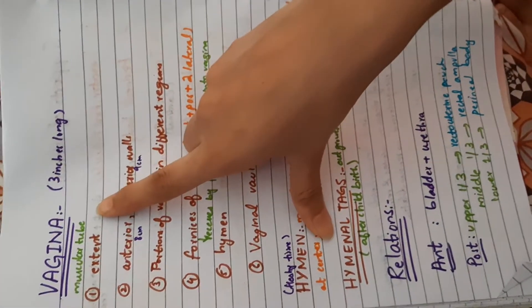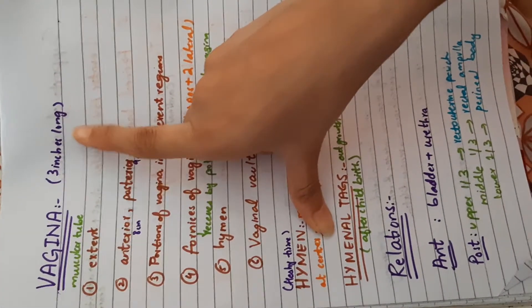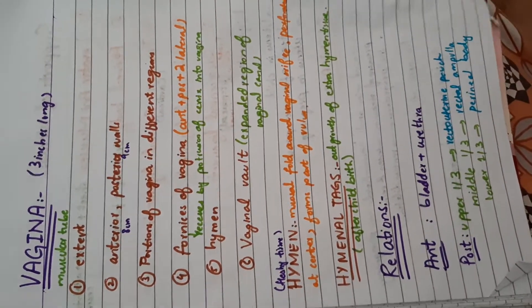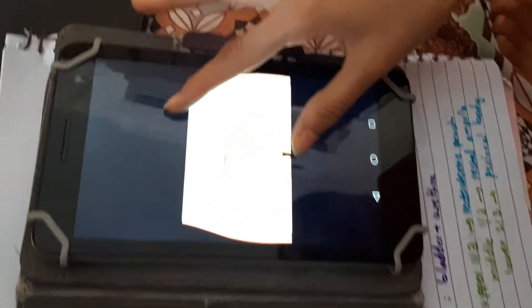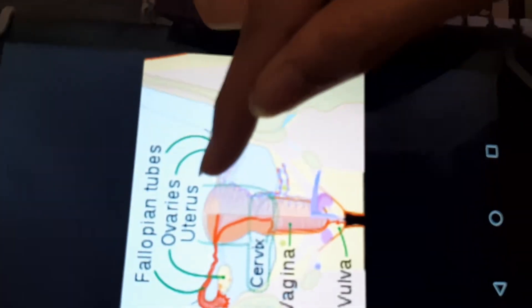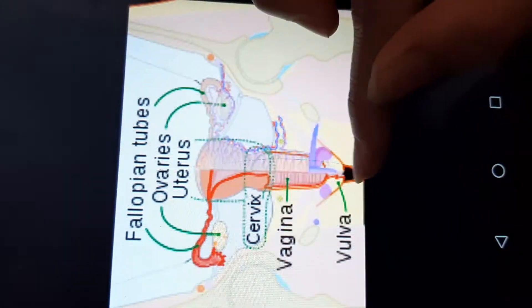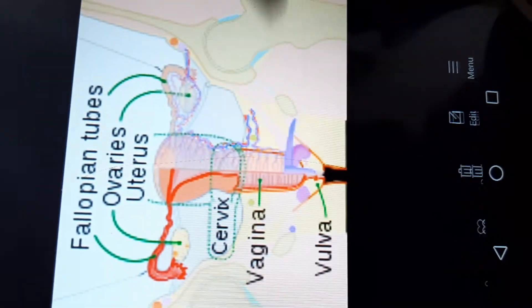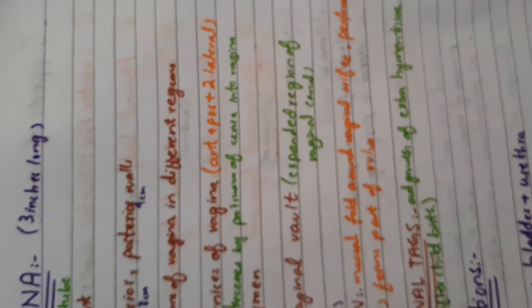We will start with vagina. Vagina is a muscular tube that is three inches long and it extends upward and backward from vulva to the uterus. Vulva is external genitalia which we will discuss later. From the uterus, there is a muscular tube which is three inches long and we call it vagina.